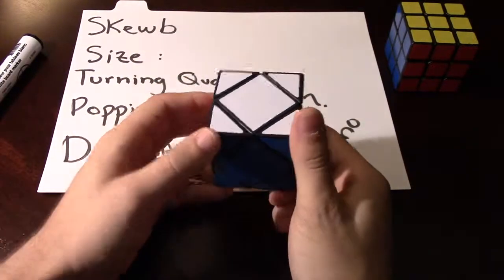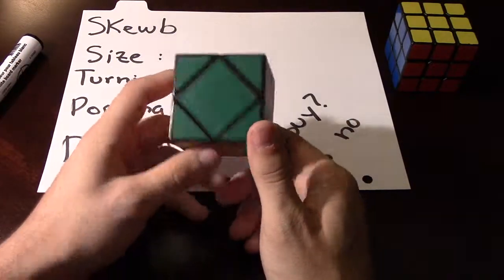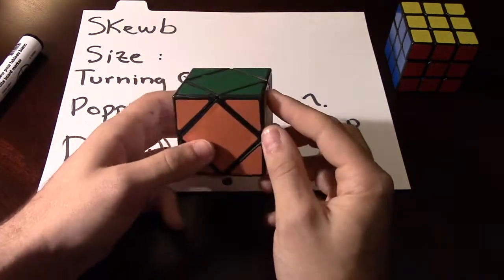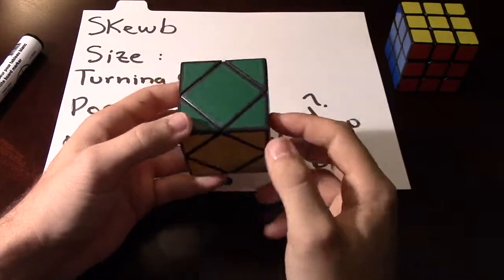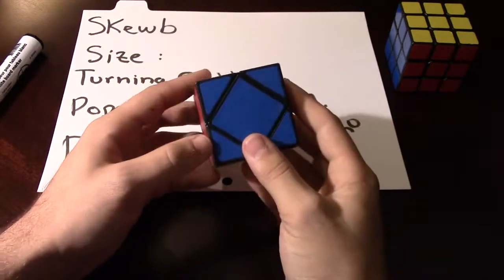Alright guys, welcome back. We're here for another puzzle review. This one is called the Skewb, and this is what it looks like. When you first look at it, you would think that the corners can turn, but that's not the case. Even if that were the case, just turning the corners will not mix up the cube.